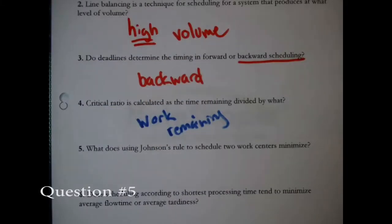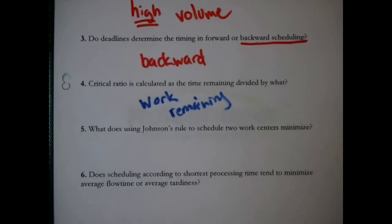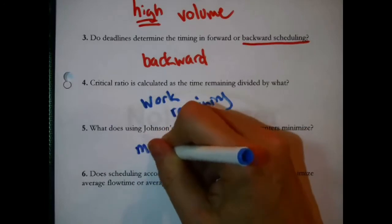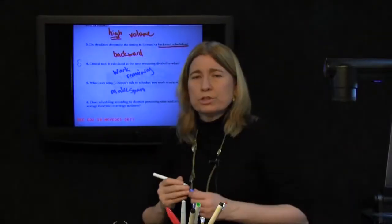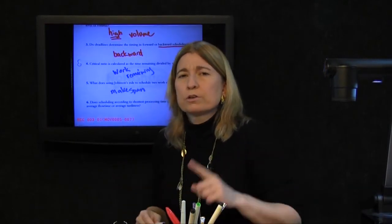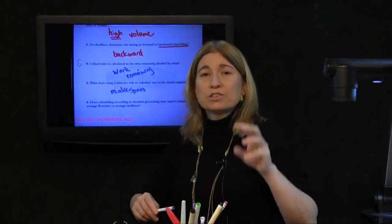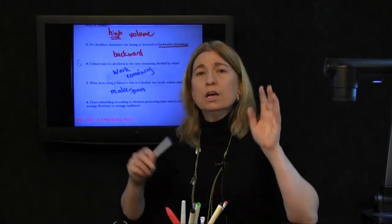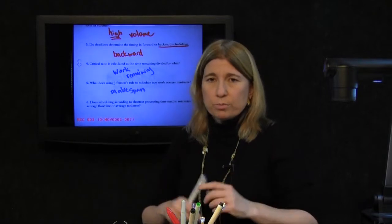Question 5: What does using Johnson's Rule to schedule two work centers minimize? Same answer as the first question: the Make Span. You use Johnson's Rule to schedule work across two work centers in order to get a set of jobs done as soon as possible — that is another way to say minimize Make Span.